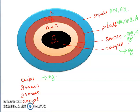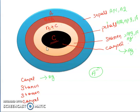In the first whorl, carpel is present. We have discussed that class A and class C are always antagonistic to each other. So in the first whorl, A is mutated, meaning in place of A, class C is expressing and forming carpel. We can conclude that class A gene is mutated. In the second whorl, stamen is present. B plus C is responsible for stamen formation. If class A gene is mutated, class C will express in its place, so C plus B will be present, leading to stamen formation. This confirms mutation of class A gene.